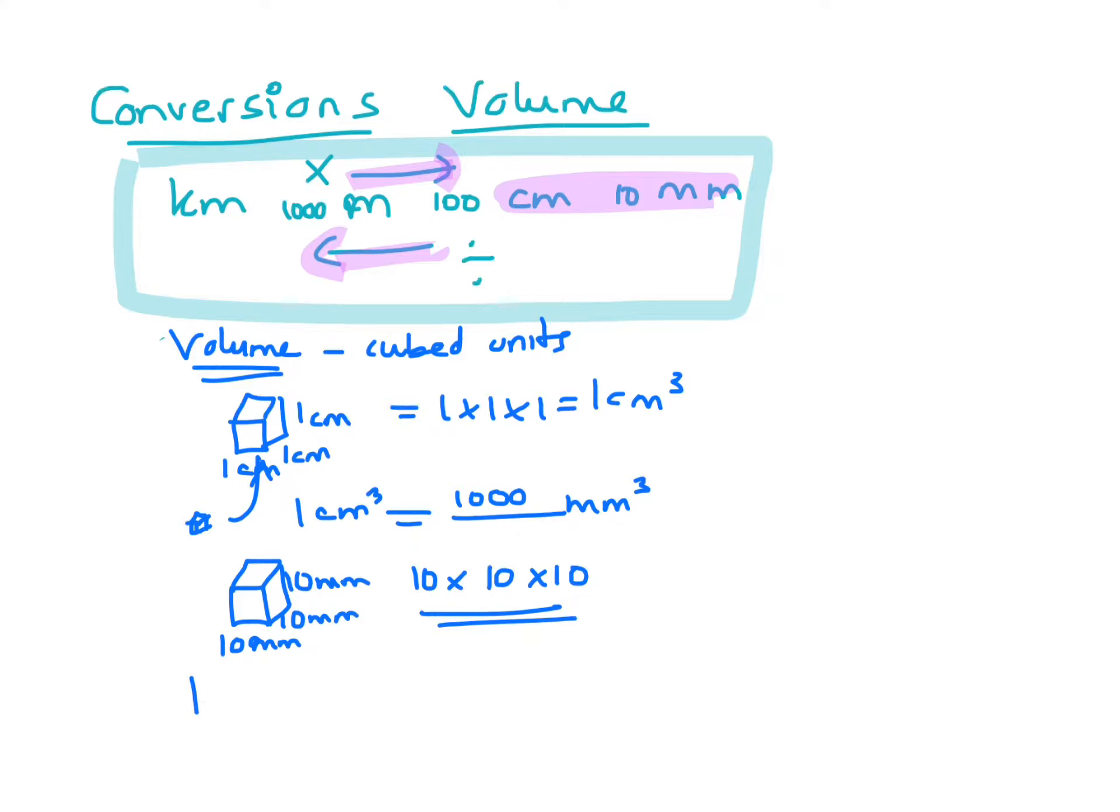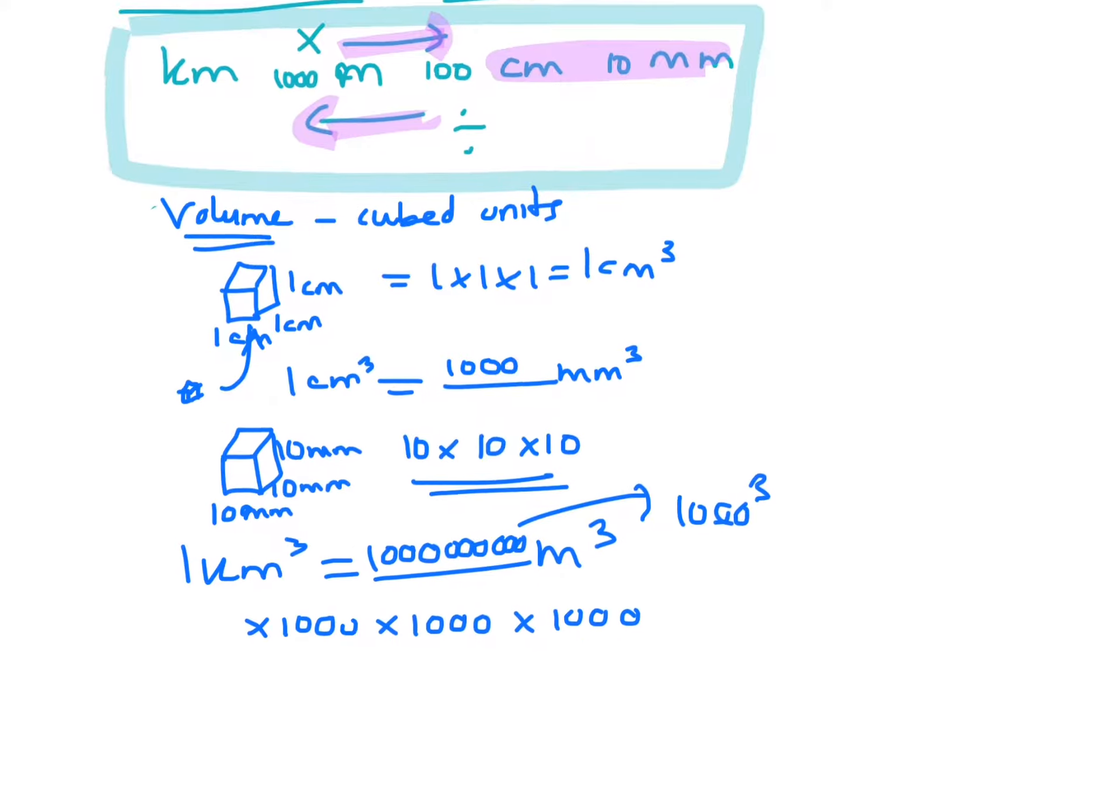And the same would work if you had kilometers cubed, and say you wanted meters cubed. Normally it's 1,000. So you're going to do 1,000 times 1,000 times 1,000. So it'll be 1 with 1, 2, 3, 4, 5, 6, 9 zeros. You can also go 1, 2, 3 cubed, and you've got a 3 on top.